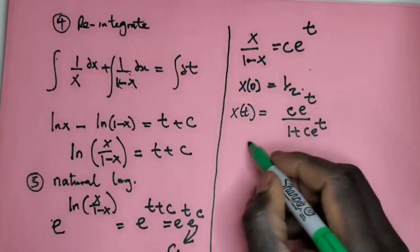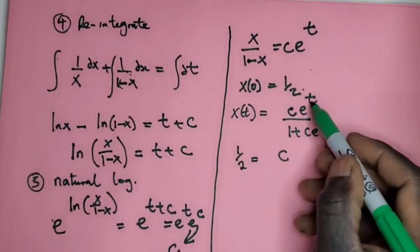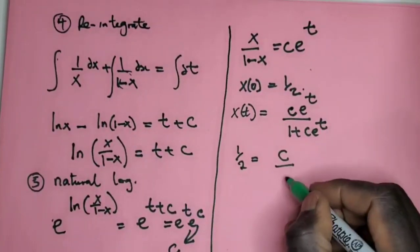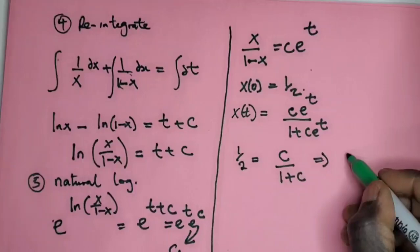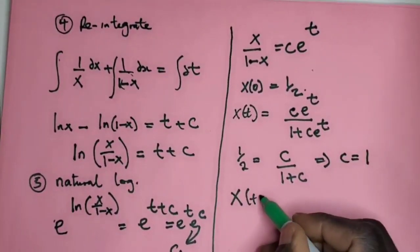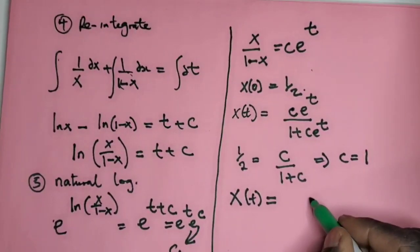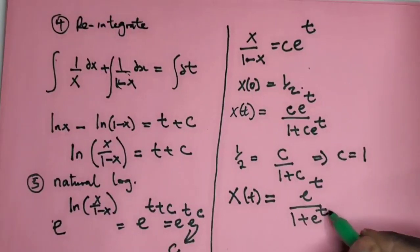Now to solve for this one, we can just say 1/2 = C, because e^0 = 1, over 1 + C. If you solve out, you're going to get C = 1. So the equation here, which is x(t), will be equal to e^t/(1 + e^t).